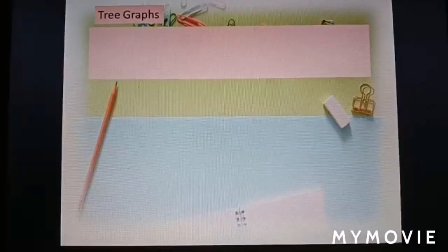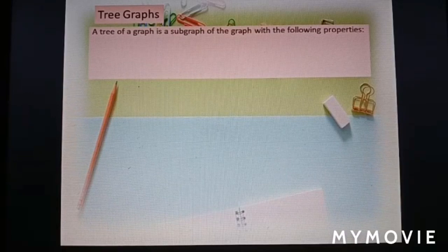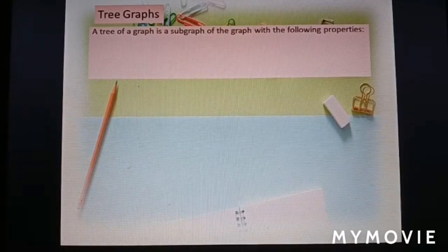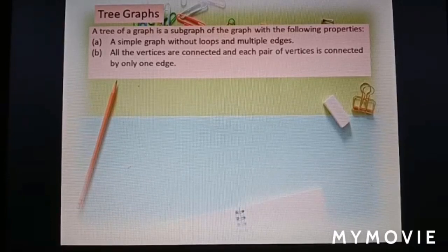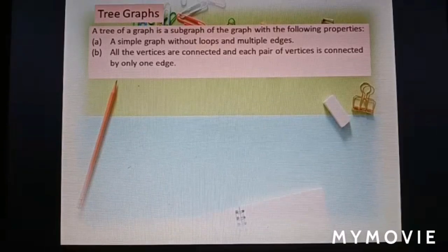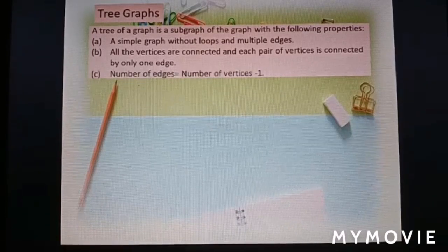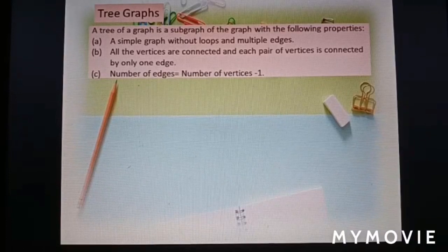Now we are going to learn tree graphs. A tree of a graph is a subgraph with the following properties: a simple graph without loops and multiple edges; all vertices are connected and each pair is connected by only one edge; number of edges equals number of vertices minus 1.